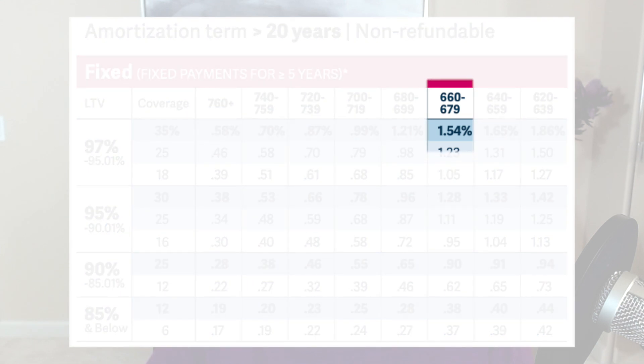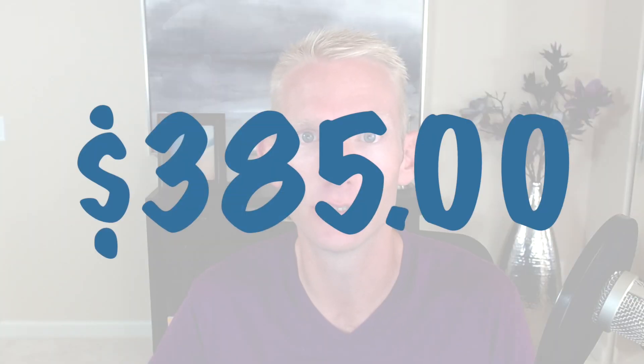But it can get even worse. With a 660 credit score using that same chart, the conventional mortgage insurance amount is 1.54%, which is $4,620 per year or $385 a month — $172 higher than FHA financing. That's a big difference, and one of the major reasons why you might want to consider FHA as a better alternative to conventional depending upon your credit score, especially when it comes to monthly mortgage insurance.